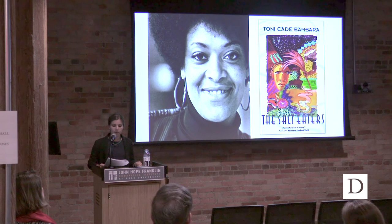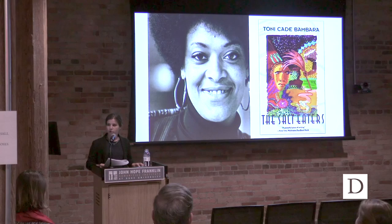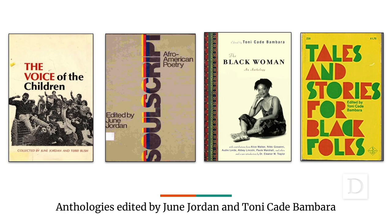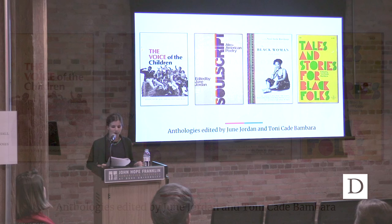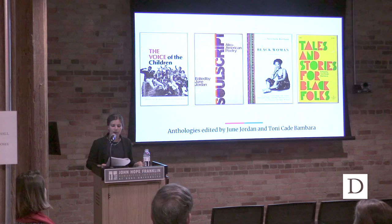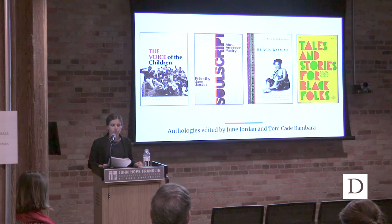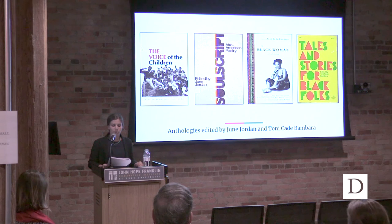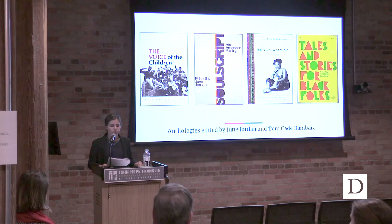To better understand this, it's useful to revisit four anthologies edited by Jordan and Bambara: The Black Woman, The Voice of the Children, Soul Script, and Tales and Stories for Black Folks. While these texts may be familiar to scholars of African American literature and women's gender and sexuality studies, scholars rarely consider the fact that all of these included student writing — much of it emerging from courses these authors taught at Tougaloo College, City College, Rutgers Livingston, and in less formal spaces like weekend writing workshops. Instead of having students submit writing solely to be read by the instructor, they organized their courses around the production of text that could circulate in the world beyond the classroom.